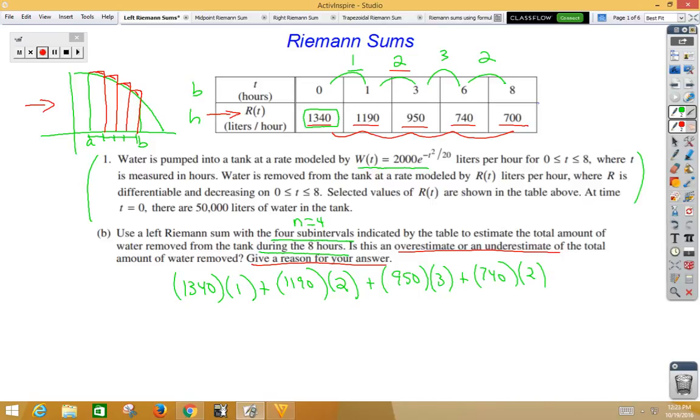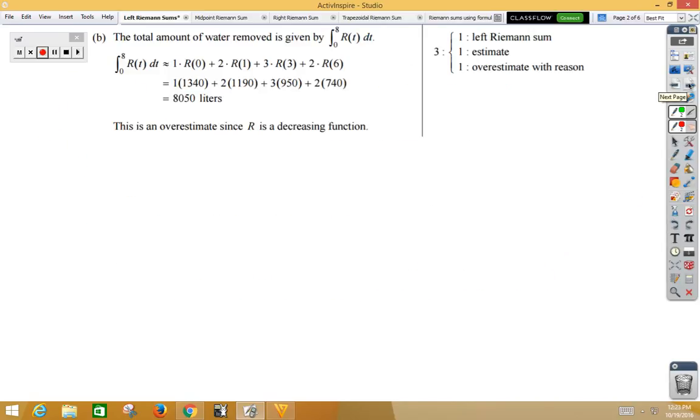Let's see how AP would grade just that portion. So, again, our Riemann sum, notice they used the same numbers that we did, adding it up would be 850 liters, overestimate, because R is a decreasing function.